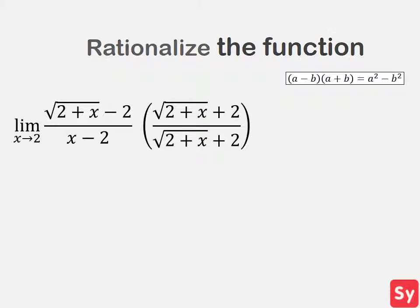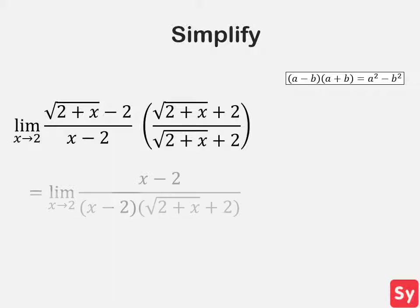Next, we simplify. This equals x minus 2 over x minus 2 times the square root of 2 plus x plus 2. We can see that we can cancel out the x minus 2, so we'll do that.